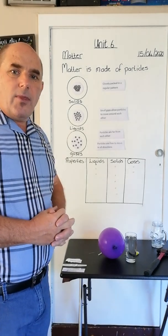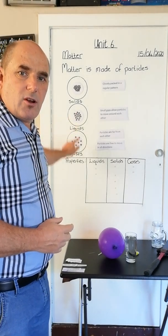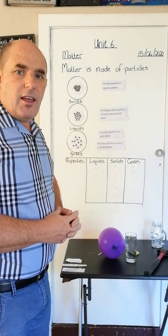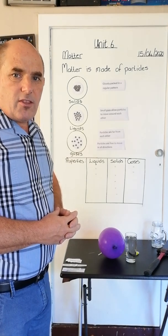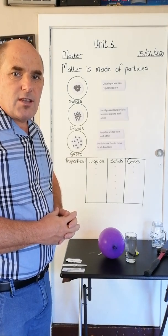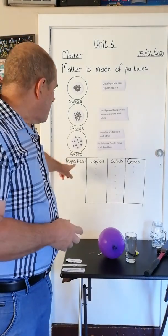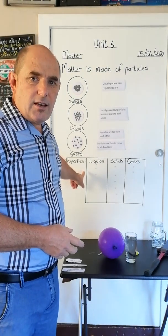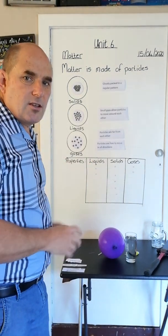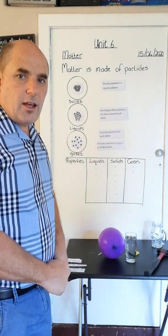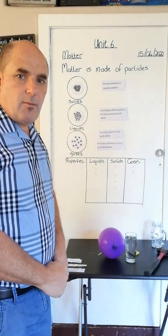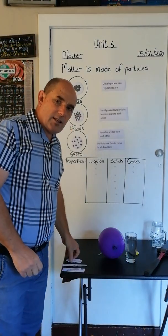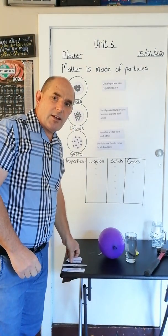The way that the particles are arranged affects the properties of those materials. So we see different properties in gases, liquids, and solids. We're going to look at what are some of the properties of gases, liquids, and solids.